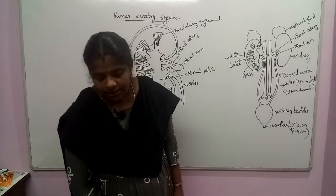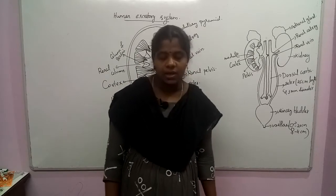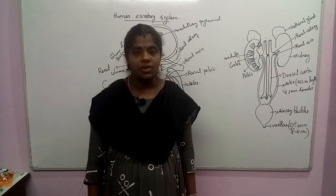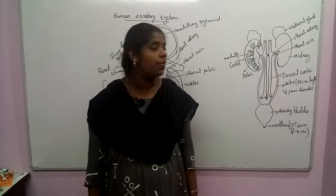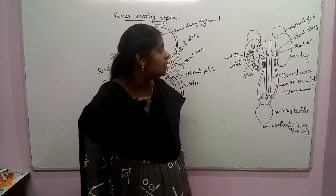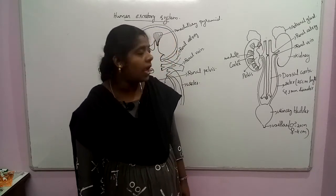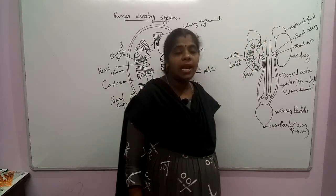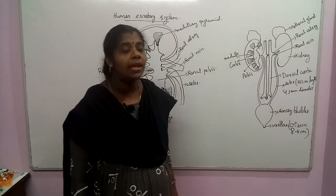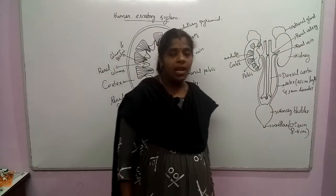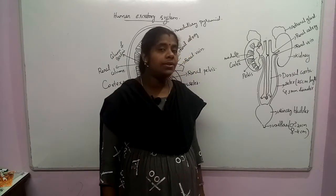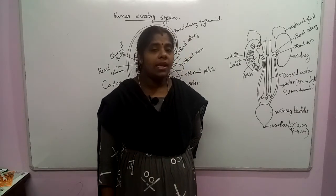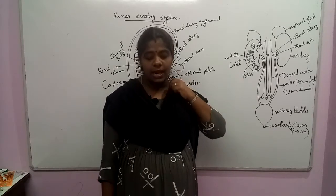The kidney is reddish brown in colour and bean shaped in structure. On top of each kidney, there is an adrenal gland, also known as the suprarenal gland. The excretory system is thus associated with this endocrine gland.